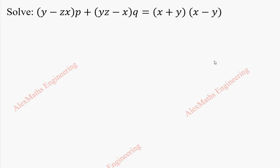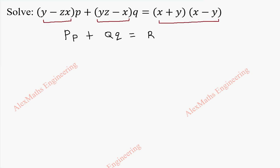Hi students, this is Alex here. In this video we are going to solve the given partial differential equation. This is of the form capital P times small p plus capital Q times small q equal to capital R. From this we can identify capital P, capital Q, and capital R. To get the solution, we have to solve dx by capital P equal to dy by capital Q equal to dz by capital R.